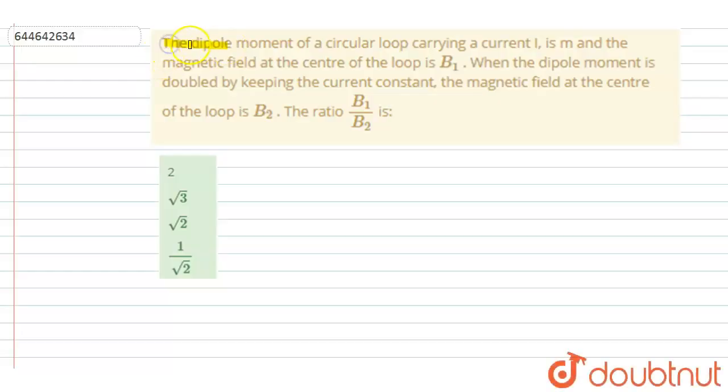Hello everyone. The dipole moment of a circular loop carrying current I is M. The magnetic field at the center is B1. When the dipole moment is doubled by keeping the current constant, magnetic field at the center is B2. Then you have to find out the ratio of B1 by B2.